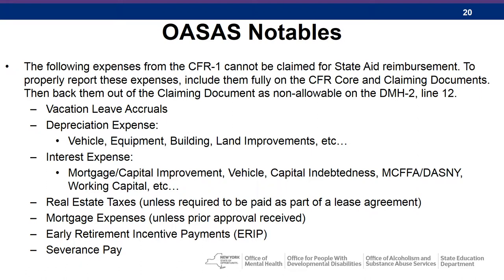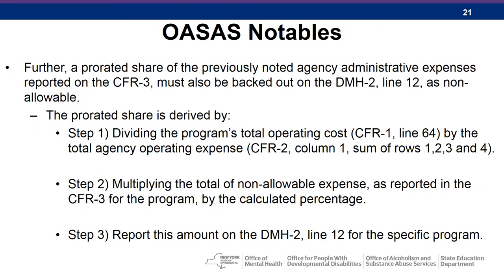Also non-allowable: mortgage expenses unless prior approval is received, and early retirement incentive payments as well as severance pay. Furthermore, a prorated share of the previously noted agency administrative expenses reported on the CFR-3 must also be backed out on DMH-2 Line 12 as non-allowable. The prorated share is derived by: Step 1 — dividing the program's total operating costs (CFR-1 Line 64) by the total agency's operating costs (CFR-2 Column 1, sum of rows 1, 2, 3, and 4). Step 2 — multiply the total of non-allowable expenses from CFR-3 by the calculated percentage. Step 3 — report this amount on DMH-2 Line 12 for the specific program.